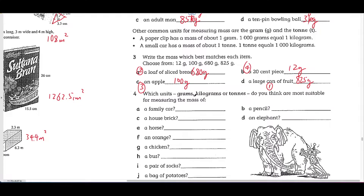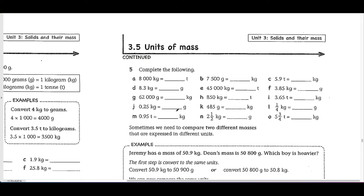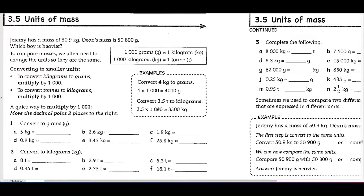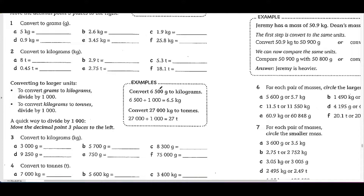Let's take a look at question 4: which units — grams, kilograms, or tons — are most suitable for measuring the mass of each item? For those who don't know, 1 ton is equal to 1,000 kilograms. A family car — I'll think tons. A house brick is probably in kilograms. A horse is probably in kilograms as well. An orange is probably in grams. I'm not going to do all of them, but you get the point. I'm going to skip some and move on to section 3.6.